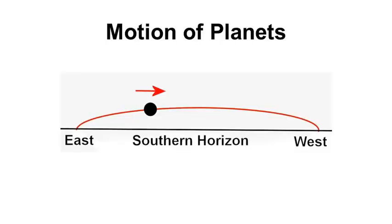From Earth, planets appear to rise in the east and set in the west. That is, appear to move westward.